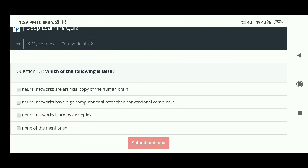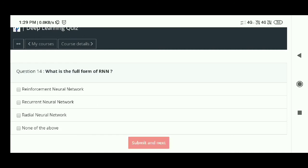13th question: Which of the following is false? The answer is D - none of the mentioned. 14th question: What is the full form of RNN? The answer is - Recurrent Neural Network. Last question: What is another name for deep learning? The answer is - hierarchical learning.